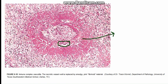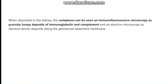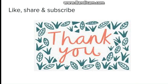On immunofluorescence, the deposits, if seen in the case of kidney — because immunofluorescence and electron microscopy is mostly done in case of glomerular diseases — the complexes can be seen as granular lumpy deposits of immunoglobulin and complement. We can find electron-dense deposits along the basement membrane in case of post-streptococcal glomerulonephritis. This was all about the morphology and immune complex mediated hypersensitivity reaction.